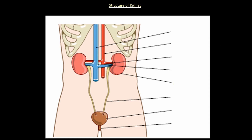Let's label some of the structures here so we can decipher the anatomy involved. The blue vein coming down here is called the vena cava. There is an inferior and superior vena cava. This would be the inferior vena cava because it's below the heart. The vena cava coming into the heart from the top is the superior vena cava.